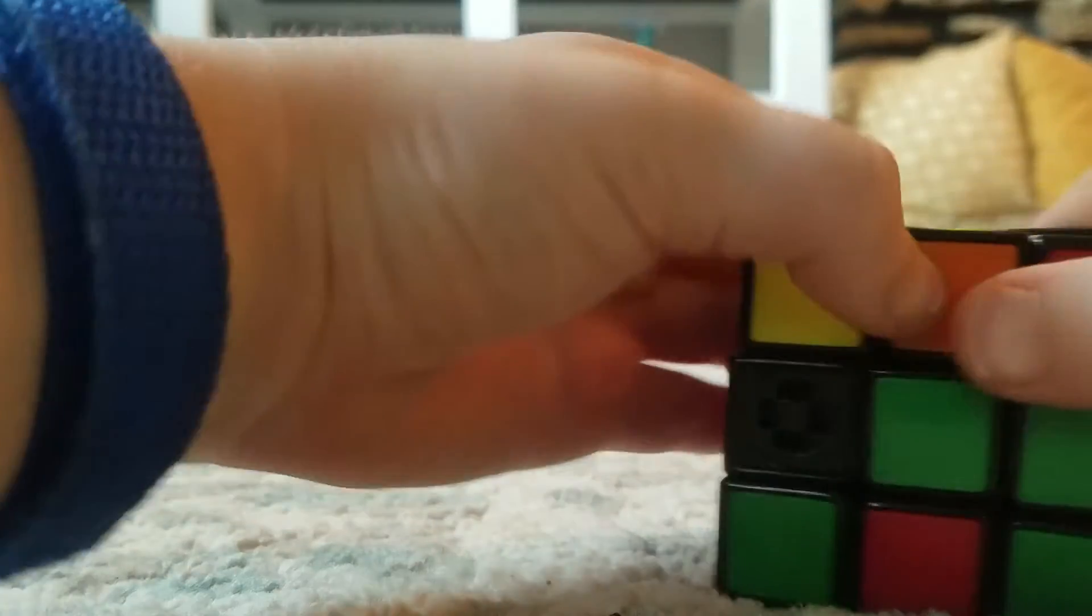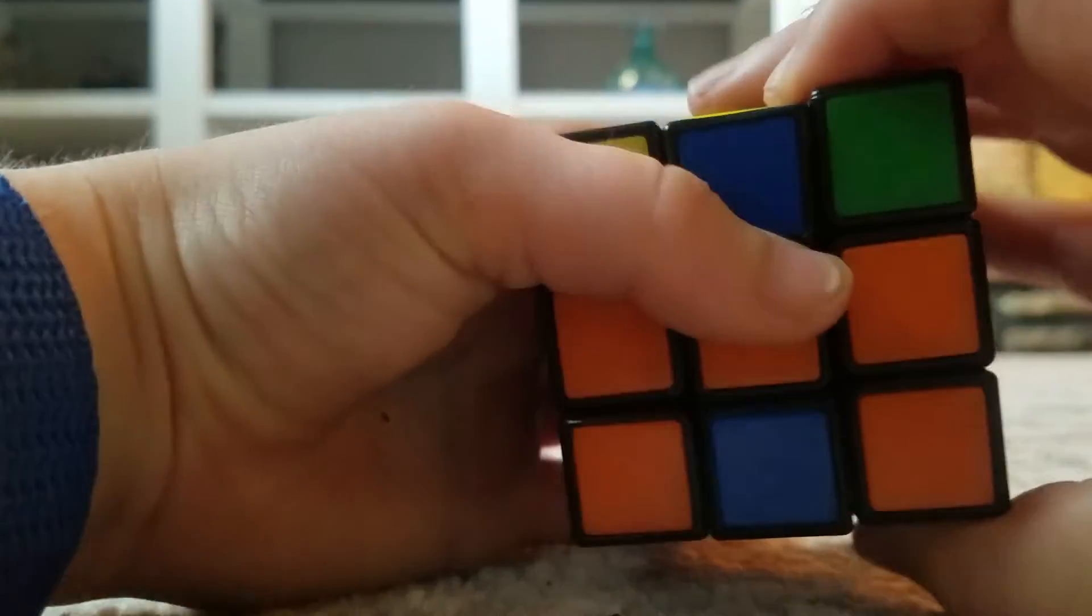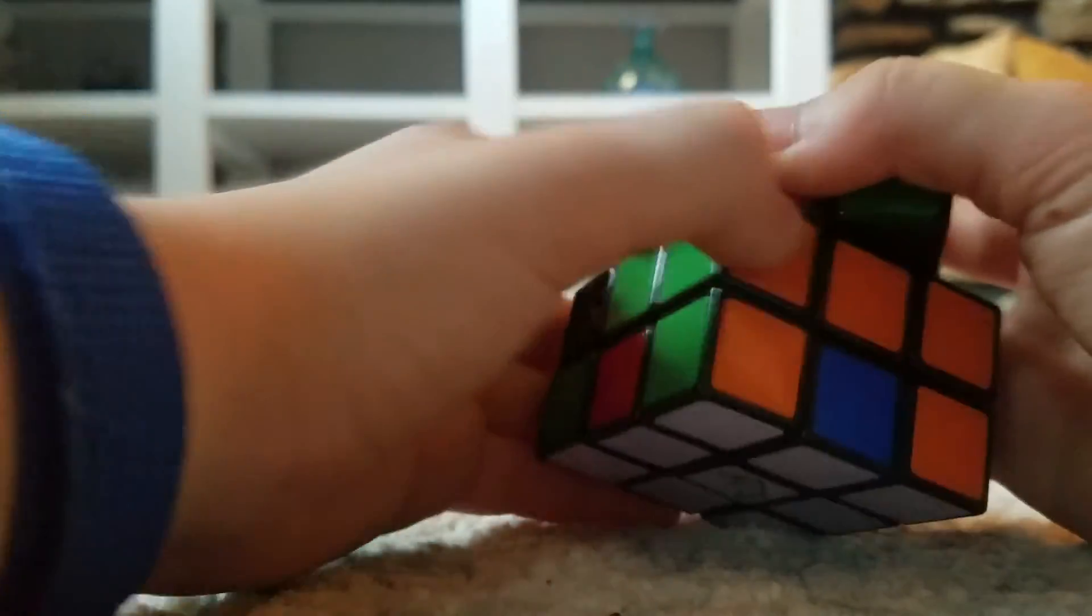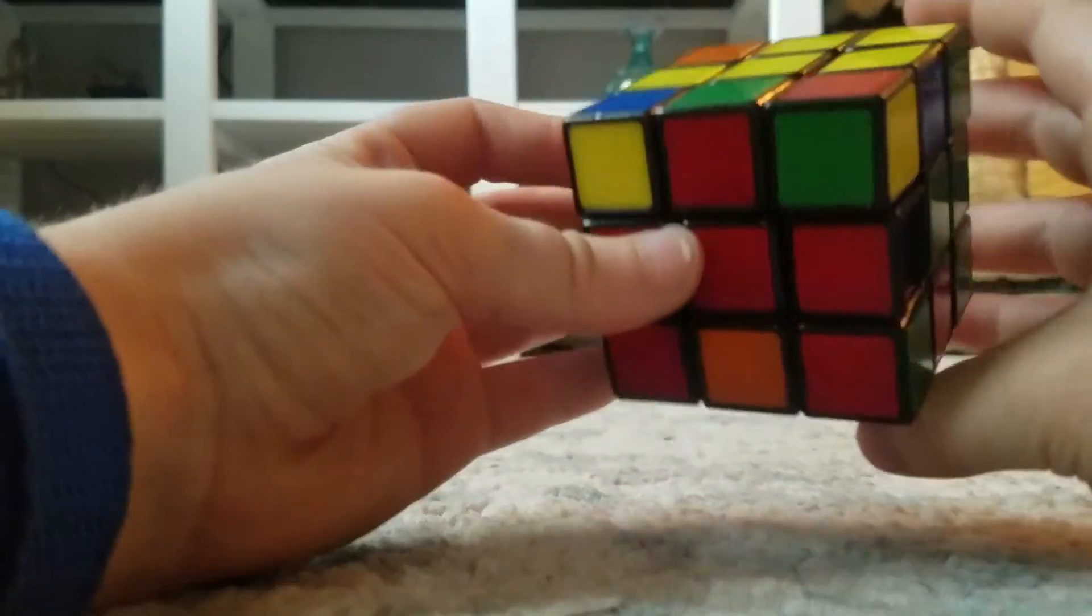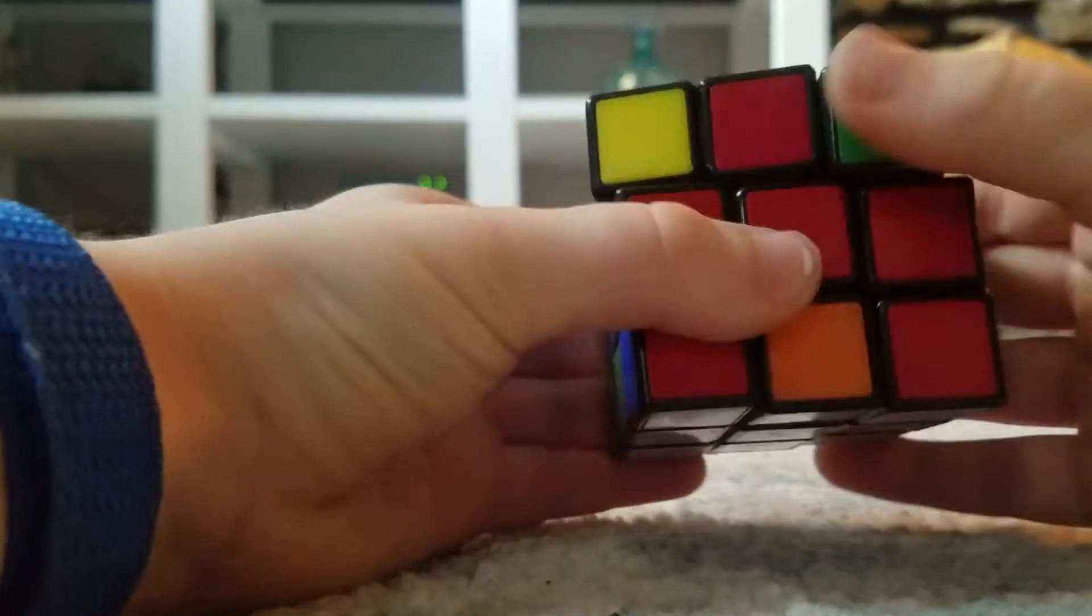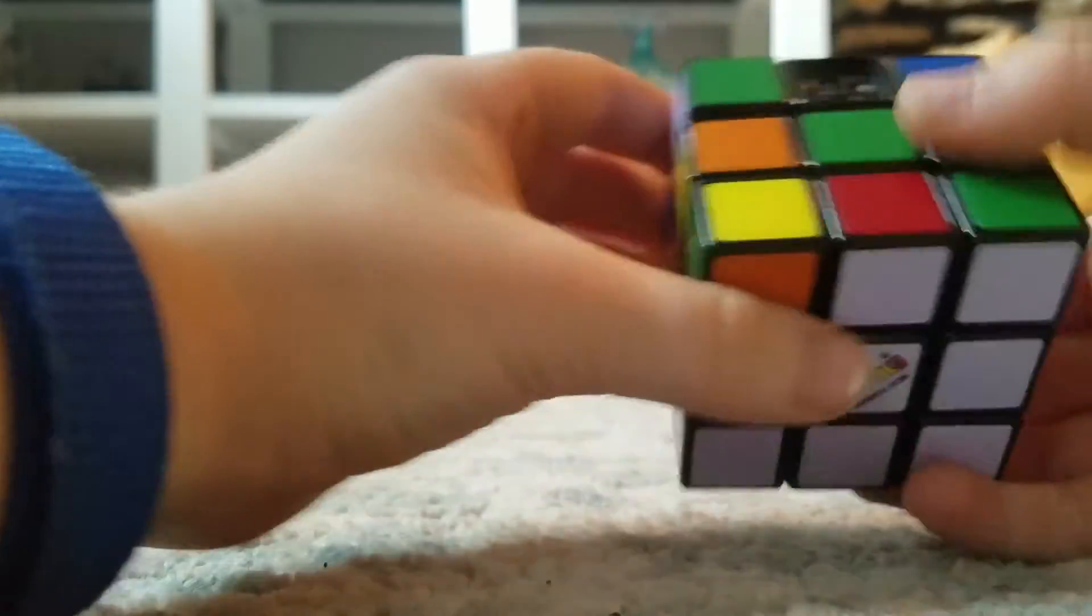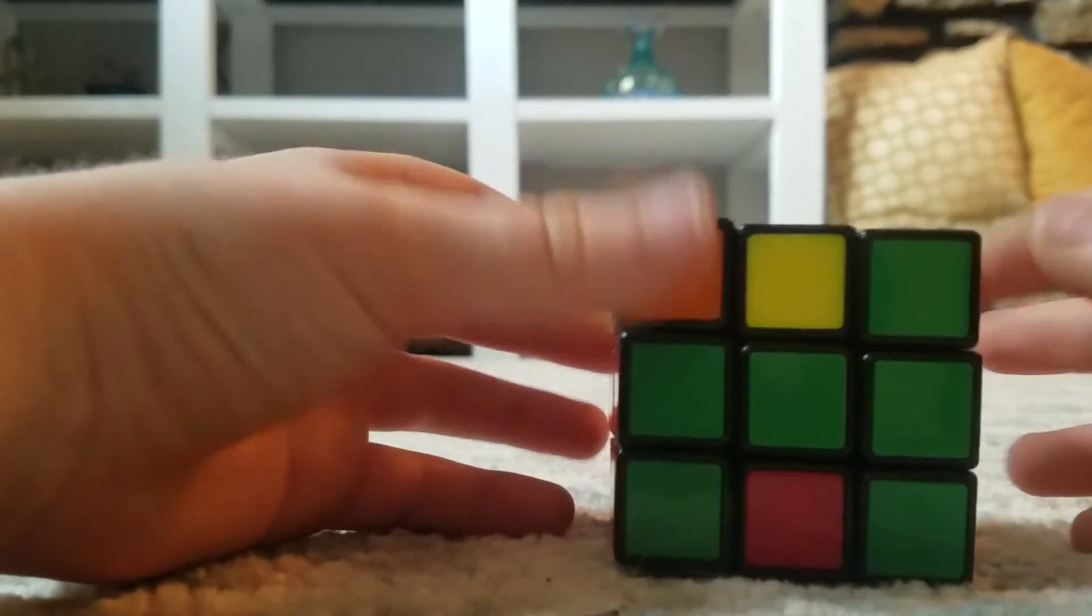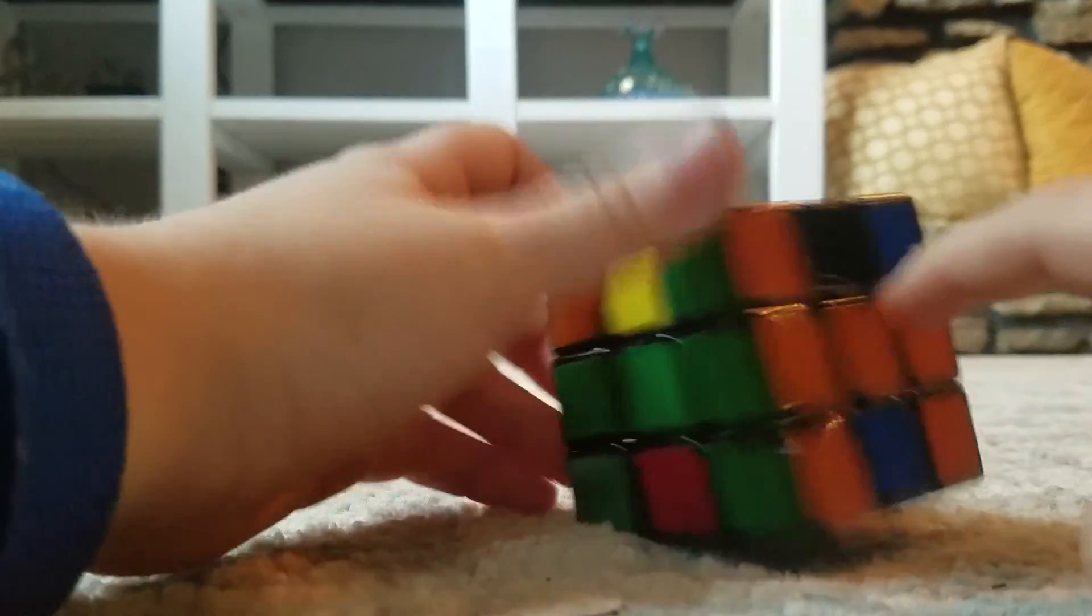Sorry, my Rubik's cube is not the best. I mean it's fun but that's not perfect. Then on the red, do it right here, it's the same as the right. And then the middle row is solved. See, all blue, all red, all green, all orange.